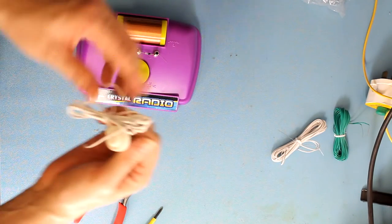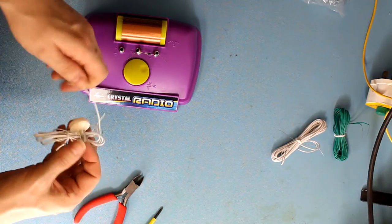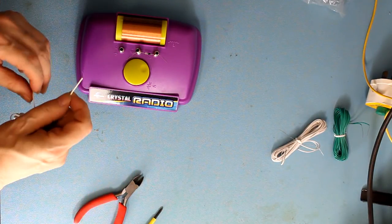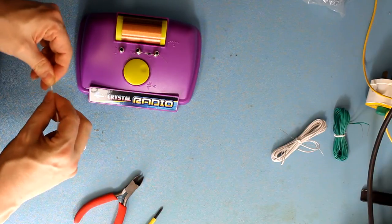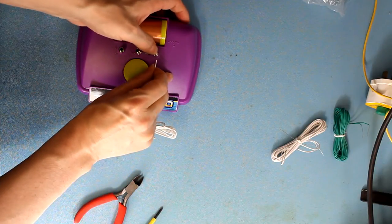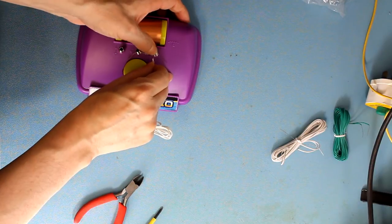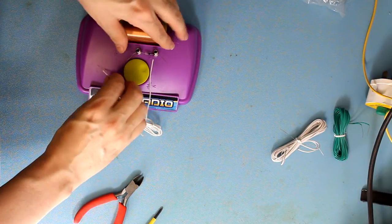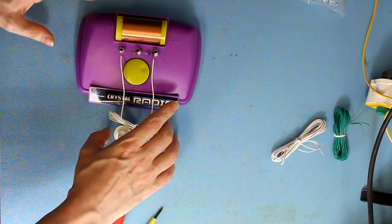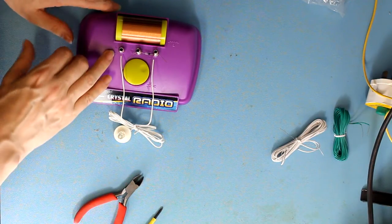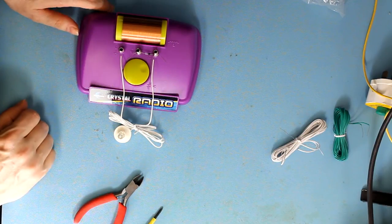You get your earpiece. Now you have two connections on your earpiece here. And they are going to go between the last spring and the first spring. So that's between your ground and the end of your diode.